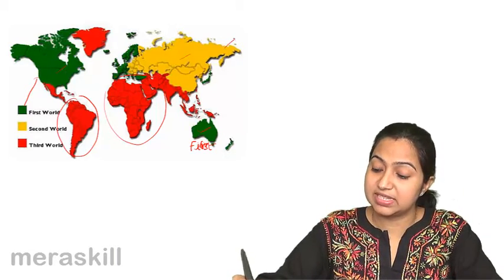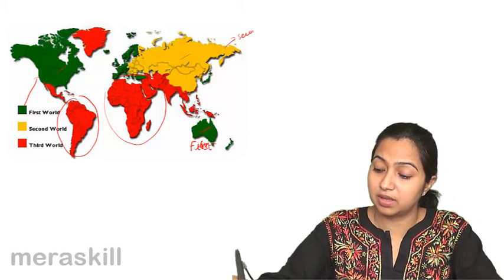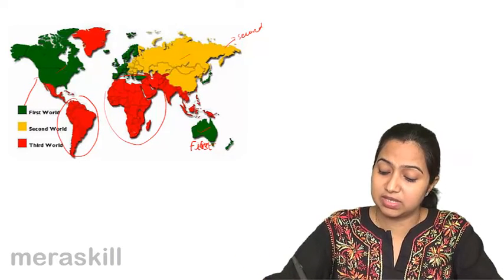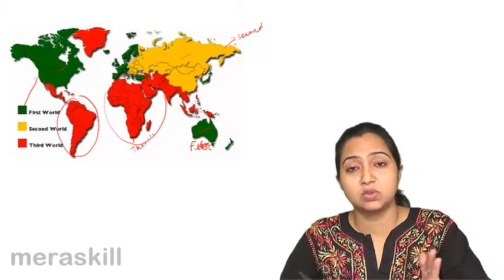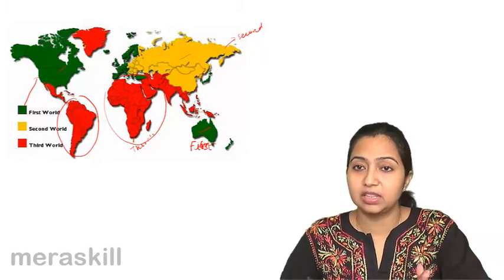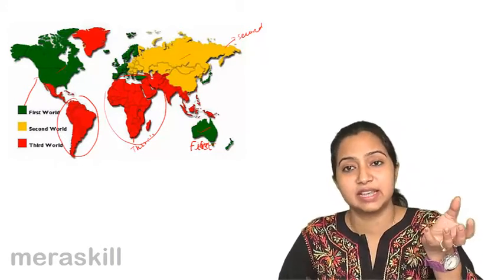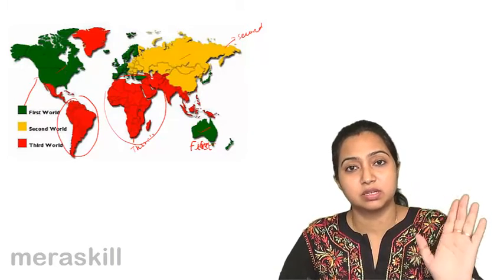This orange one is the second world country, and the red ones are the third. So even if I don't explain it to you, you understand that the green ones come first, the orange ones are second, and the red ones are third.